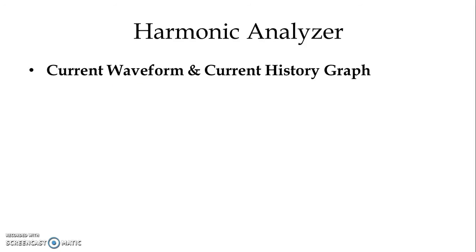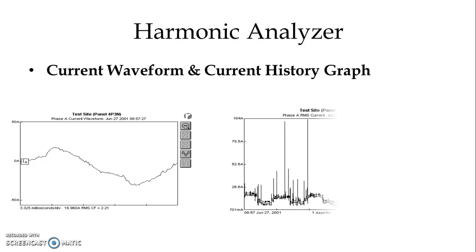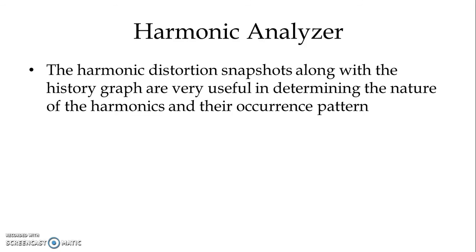We can have a current waveform as well as a current history graph. In the figure we can see one current waveform of a lighting panel which provides supply to fluorescent lights, and at the same time we can have a current history graph. The harmonic distortion snapshots along with the historic graph are very useful in determining the nature of the harmonics and their occurrence pattern.